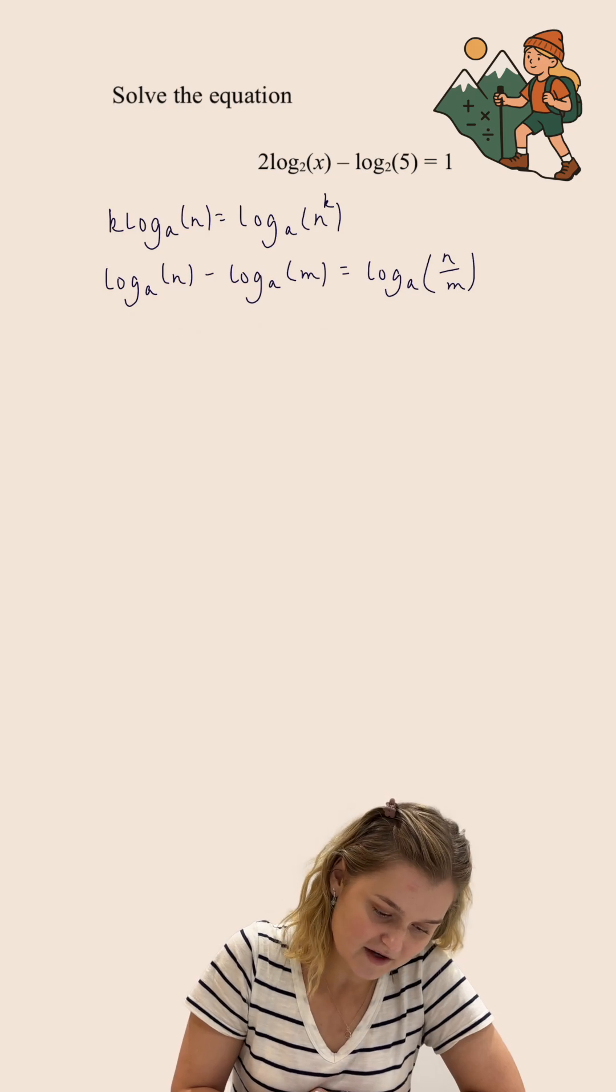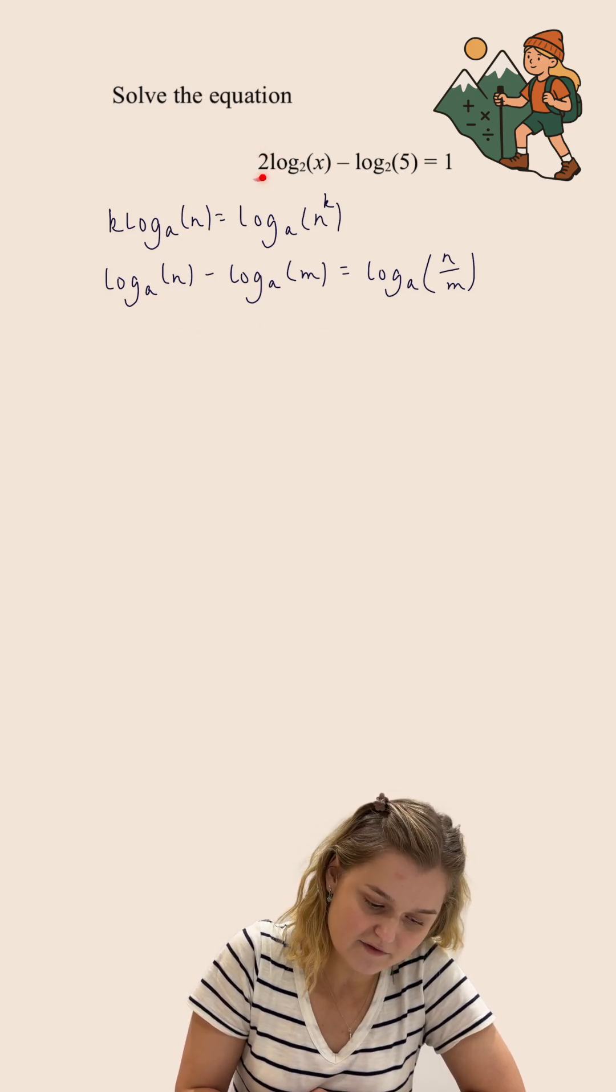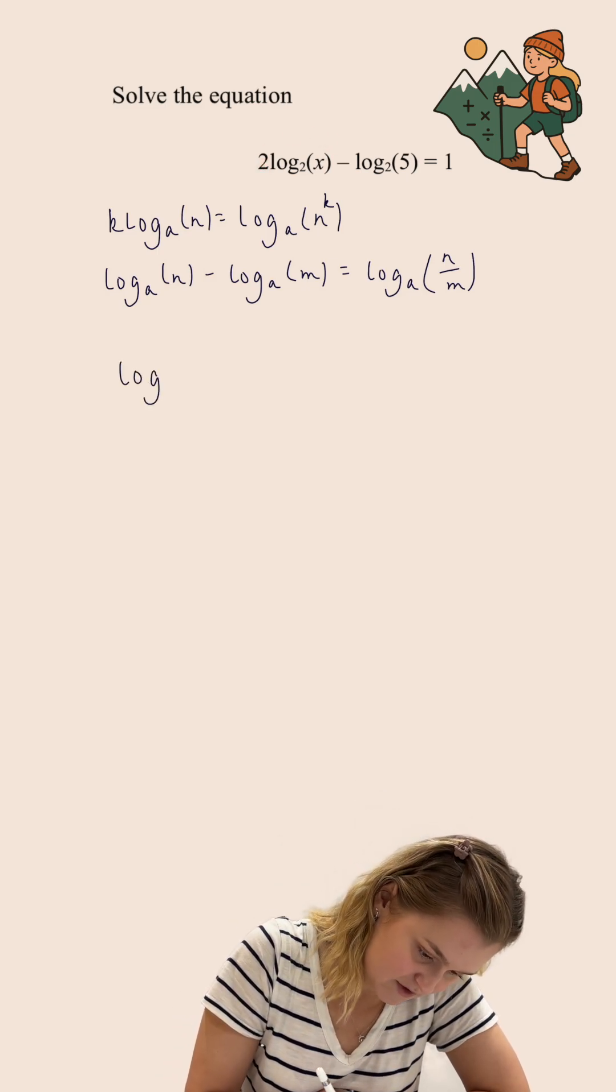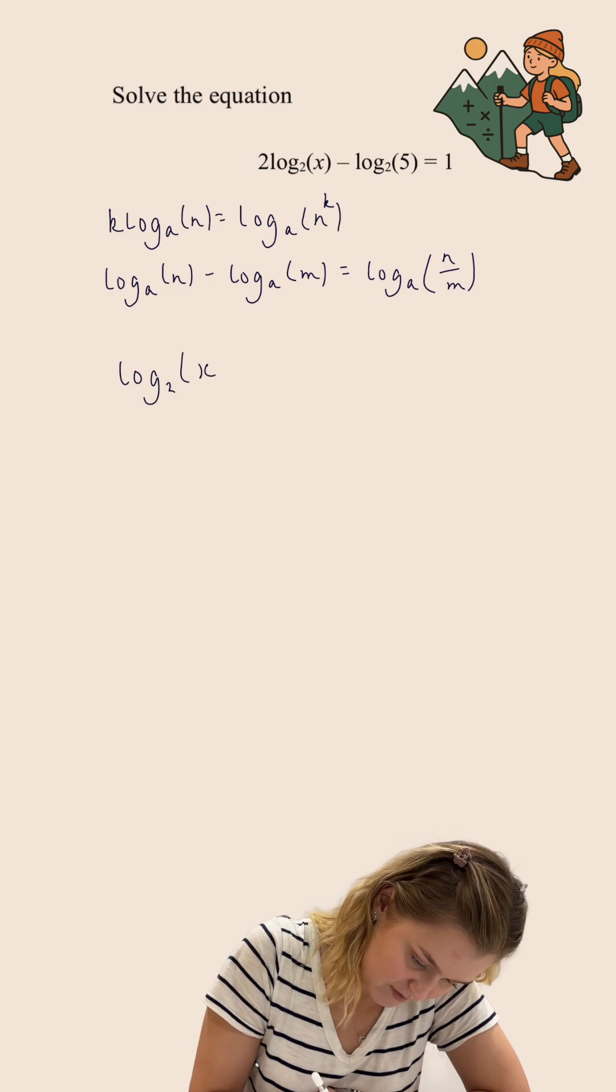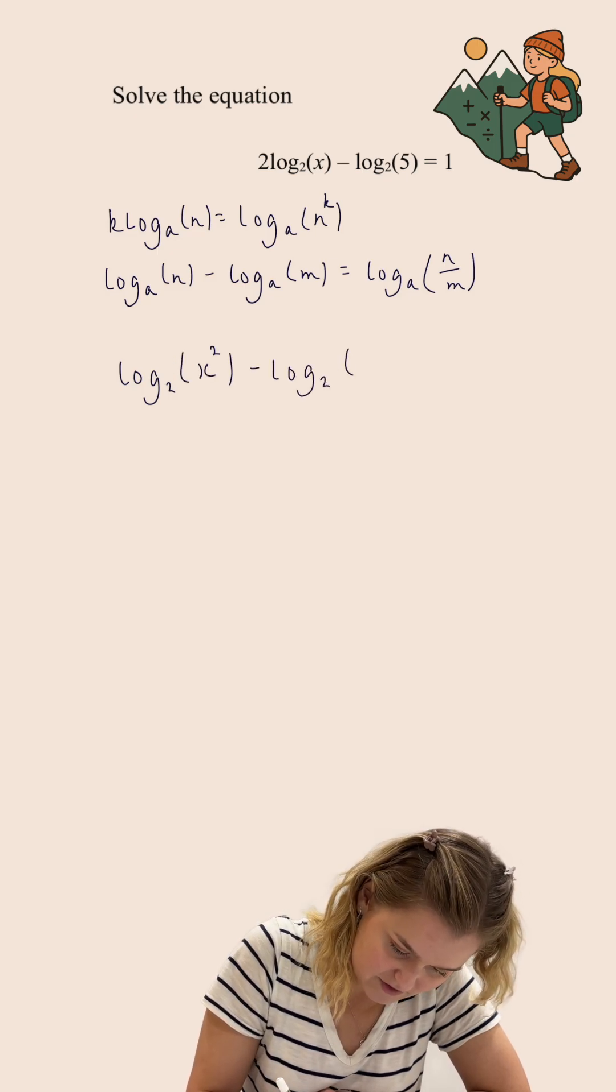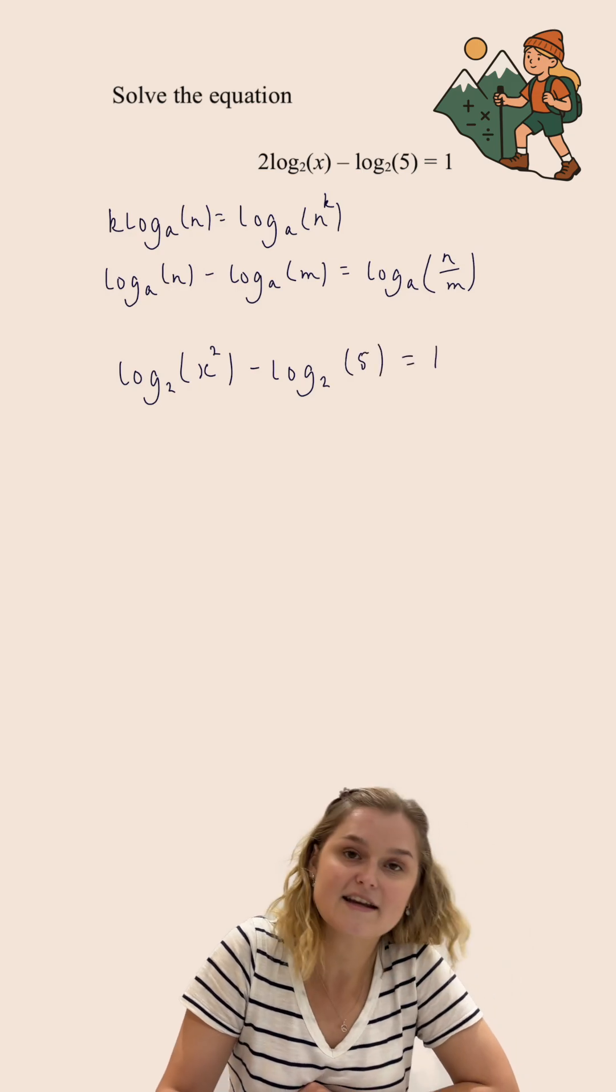First of all, I'm going to use this power rule. So this 2 that is in front of the log₂(x) can be brought up to become the indice with the x. So that's actually equal to log₂(x²). I've still got my subtract log₂(5) and this still equals 1.